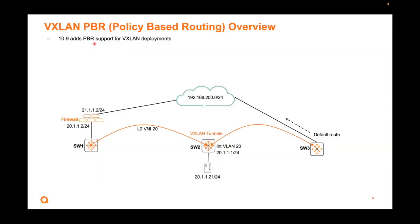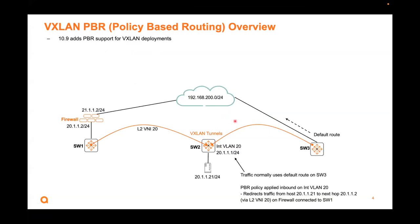10.9 will add PBR support for VXLAN deployments. Before that, we have PBR support for non-VXLAN. To give you an example, traffic will normally use the right side to get out to the destination. If you want to, you can have a PBR policy applied inbound on this interface SVI. You can say: I want to redirect traffic from this particular host to this next hop — maybe to a firewall, that's a firewall IP, to the 1.2.